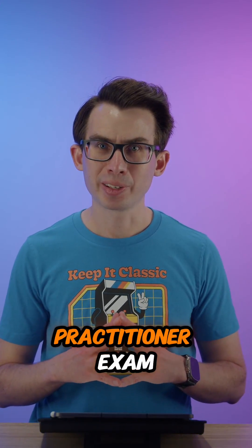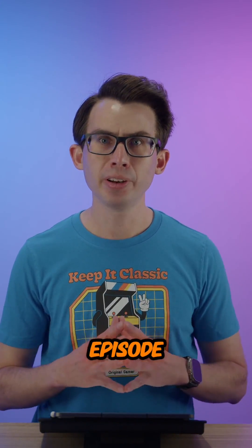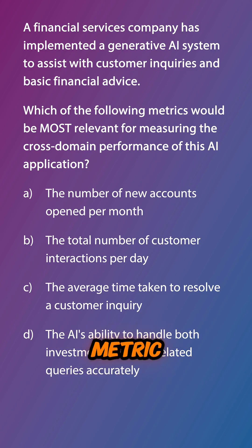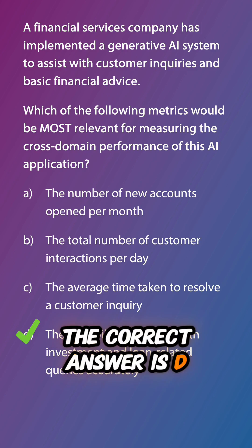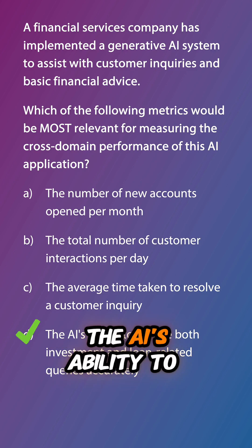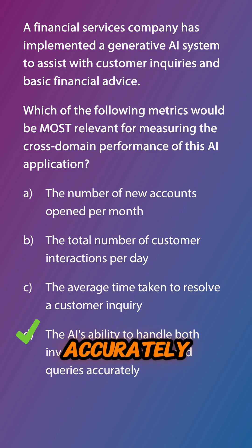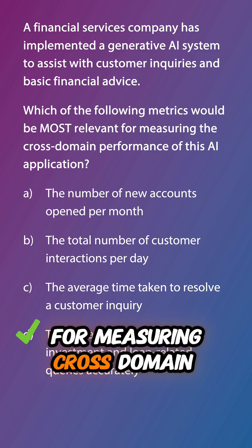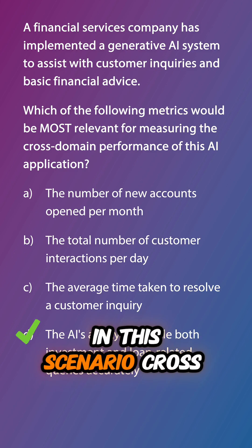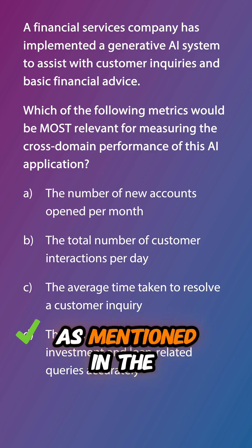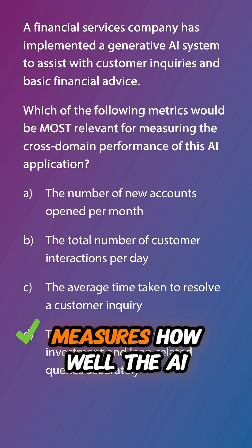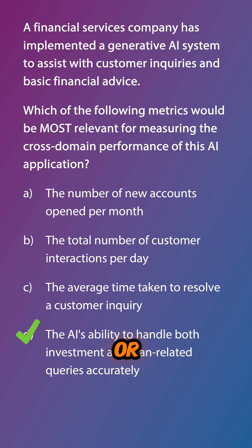Welcome back to another AI Practitioner Exam Byte. Reviewing the question from the previous episode, identifying the most relevant metric, the correct answer is D — the AI's ability to handle both investment and loan-related queries accurately. This is the most relevant metric for measuring cross-domain performance in this scenario. Cross-domain performance measures how well the AI performs across different areas or tasks.